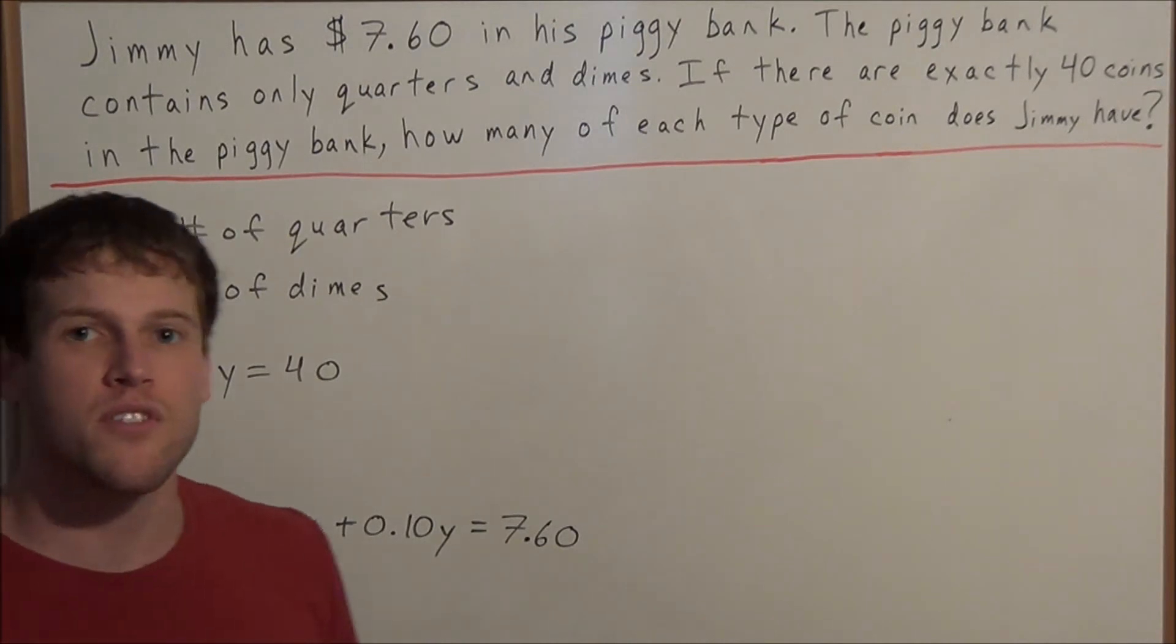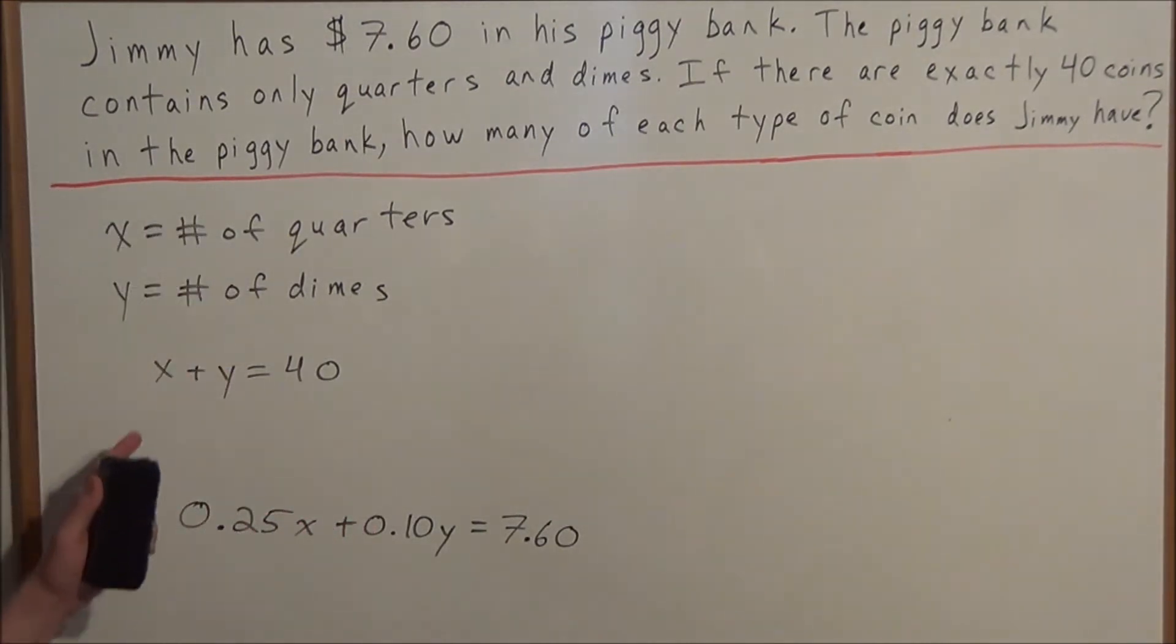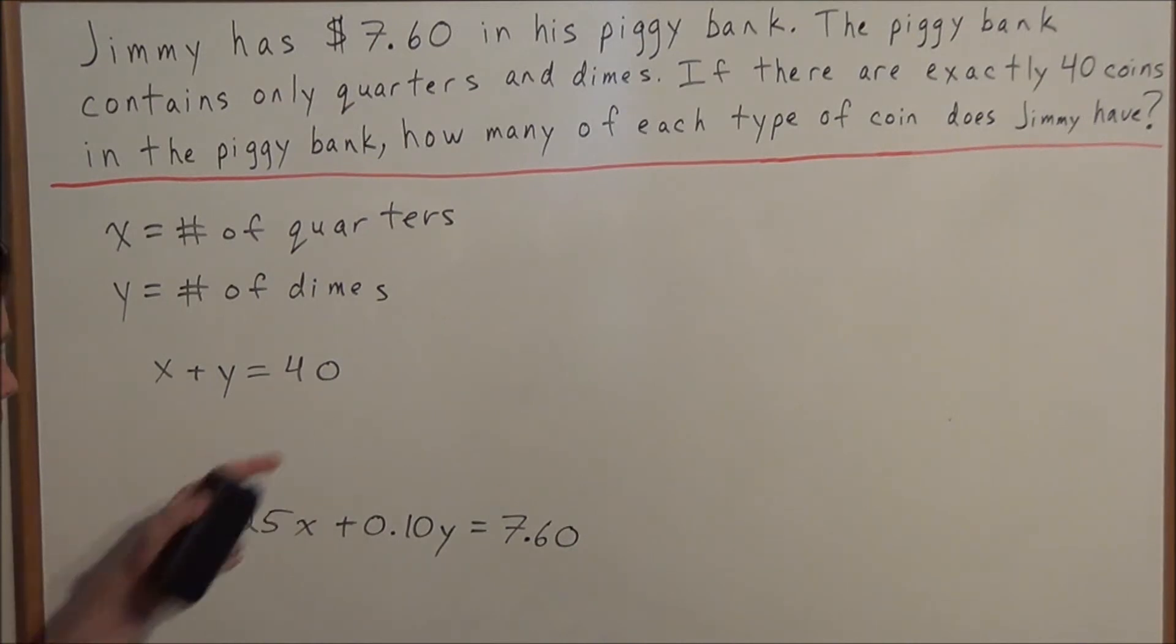So now to find the number of quarters and dimes, this is where the substitution technique is going to come in. We have two equations with two variables, and we want to be able to reduce this to a single variable equation. So we have x plus y equals 40.